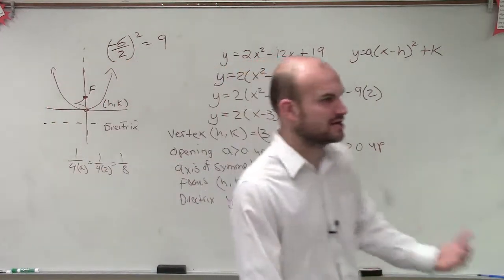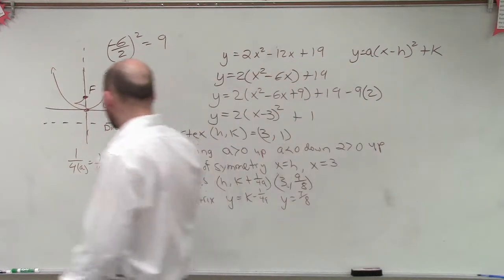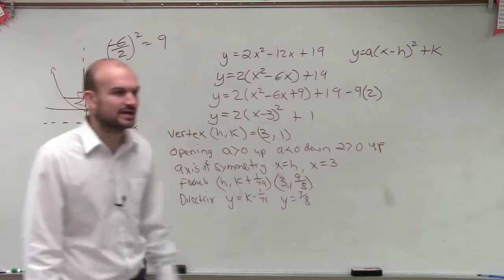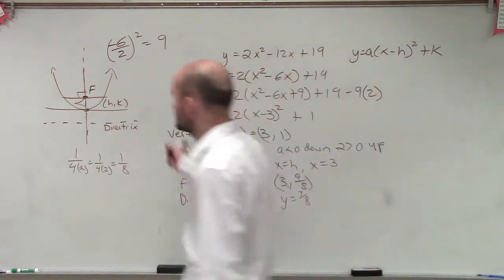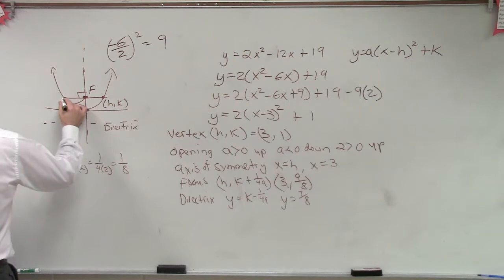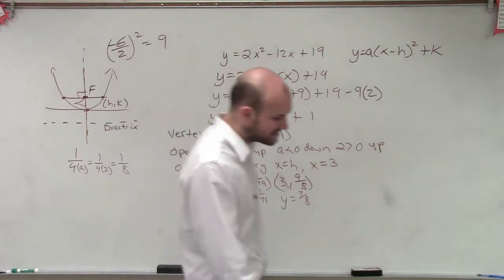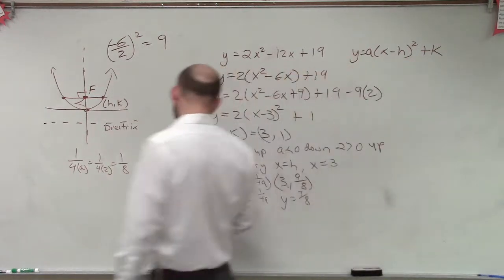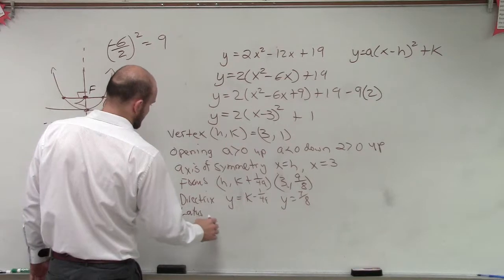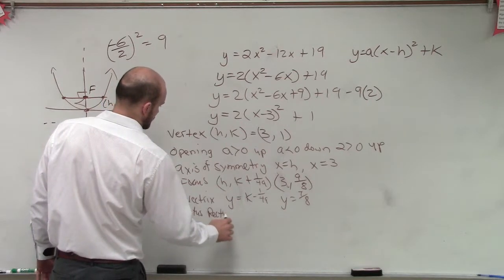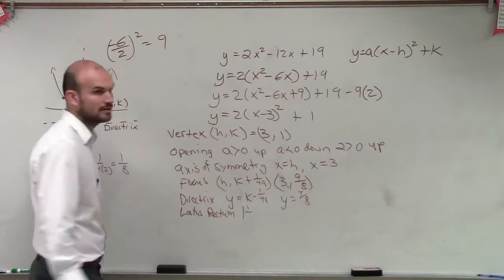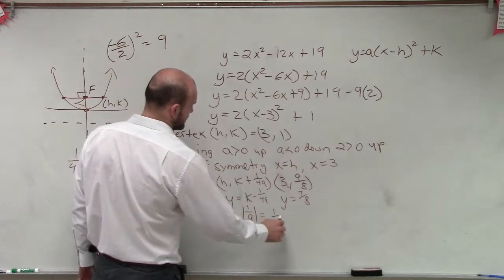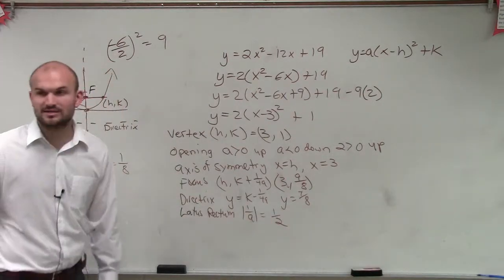And just to help you guys out with our information, we also talked about the latus rectum, which was our perpendicular line to the axis of symmetry that goes through our focus and connects two points on the parabola. And we said the distance of the latus rectum was, how far? Absolute value of 1 over? A. So therefore, our latus rectum is going to be, the distance of our latus rectum is going to be 1 half.